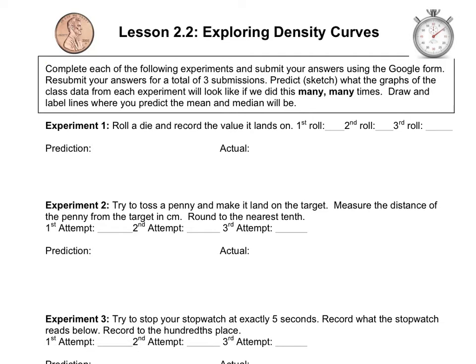If you've got a die handy, you can roll a die. Or if you don't, you can use an online die rolling simulator. You only need one die, but you're going to roll it three times. A third alternative is using your calculator — if you've got your TI-84 handy, go to the math key, which is right under the green alpha button.